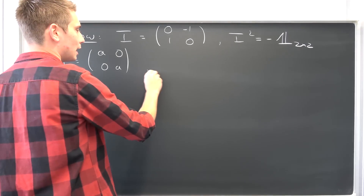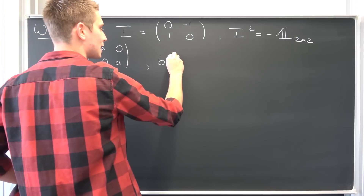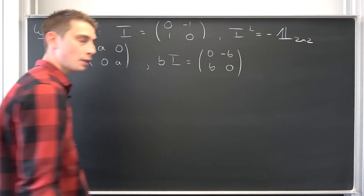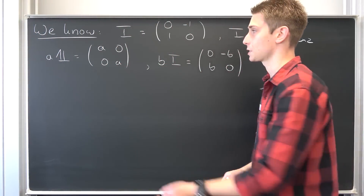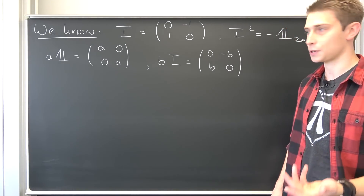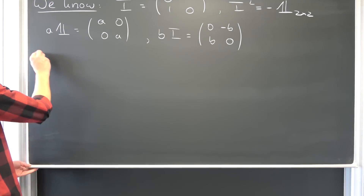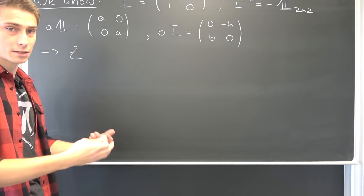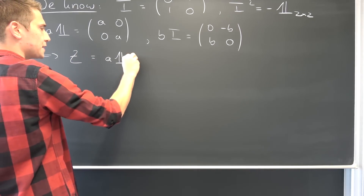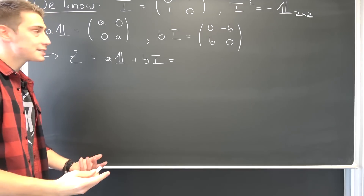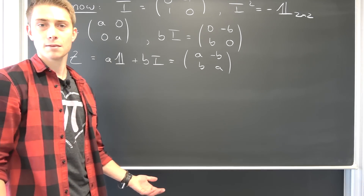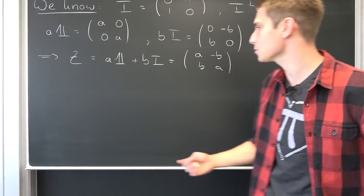We are going to multiply our I by some real number B — a and B are real numbers — and we are going to end up with [0, -B; B, 0]. Now if we add those two together, defined pointwise, we are going to have a, -B, B, and a. We can define ourselves generalized complex numbers: some complex number Z equals a times the identity matrix in two dimensions plus B times I, which is nothing other than [a, -B; B, a]. Those are our complex numbers. They look kind of anti-symmetric — they are absolutely nice.